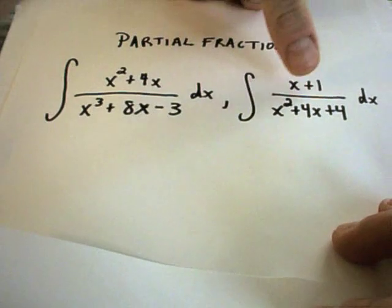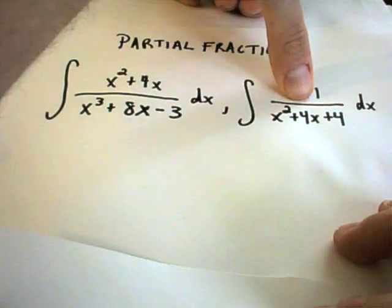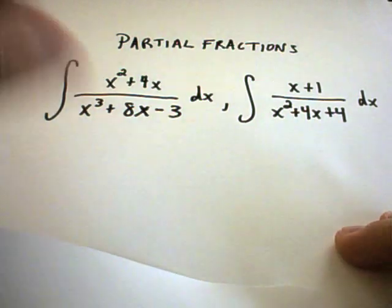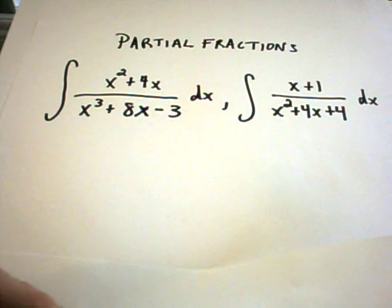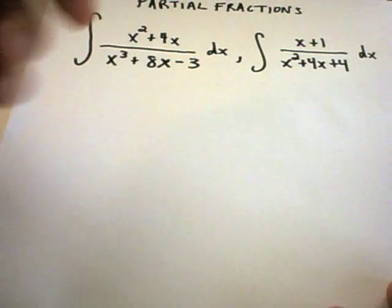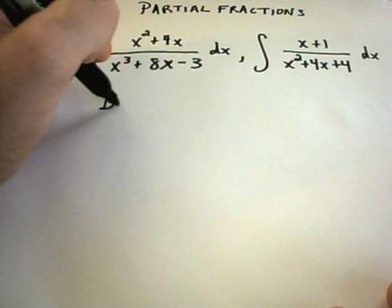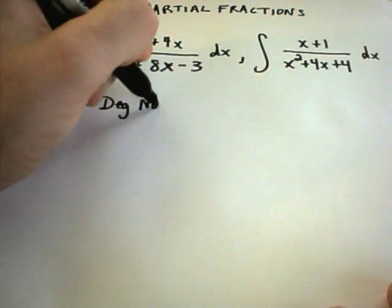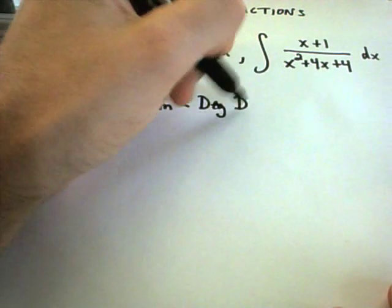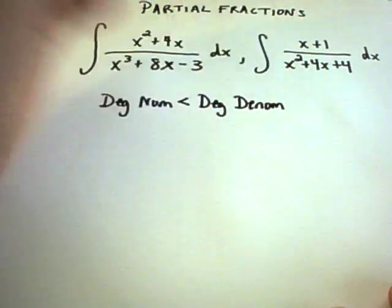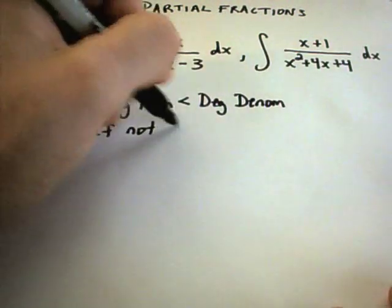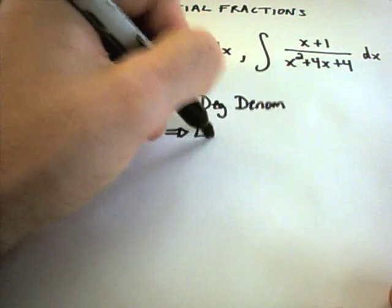You could also have a single number on top, like 1 over x squared plus 4x plus 4 — that's still a rational function and you can use partial fractions. One important requirement: the degree of the numerator must be strictly smaller than the degree of the denominator. If not, you'll have to do long division of polynomials first.